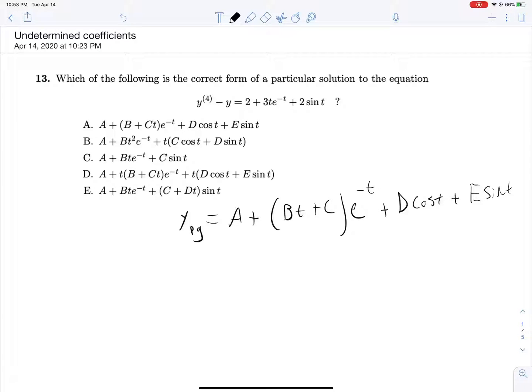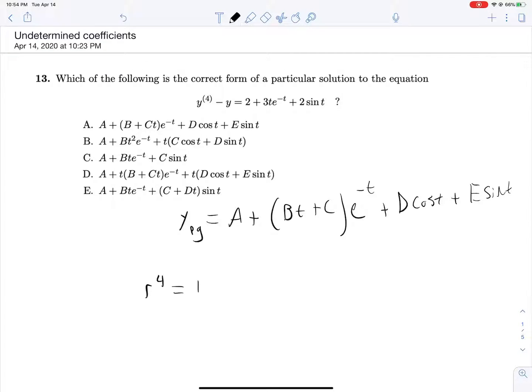So let's solve our characteristic equation, which is R to the fourth minus 1 equals 0, or R to the fourth equals 1, for our solutions. And in fact, just to see this a little bit better, this is R to the fourth minus 1 equals 0, we can factor this as R squared plus 1 times R squared minus 1 equals 0. This will solve to be R equals plus or minus 1.